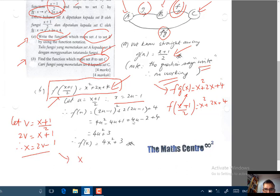Therefore x squared plus 2x plus 4 becomes (2v-1) squared plus 2(2v-1) plus 4. That's what you see here. Kita ganti sahaja, di mana kita nampak x, kita ganti dengan 2v-1, 2v-1, 2v-1.